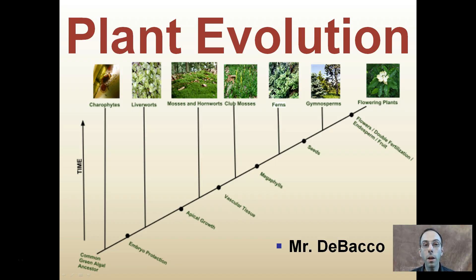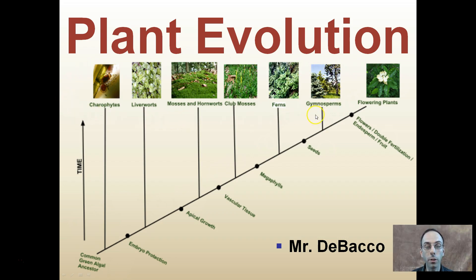This video is going to cover some of the basics of plant evolution and some of the key factors that divide different species and complexity. Starting all the way with the common ancestor being green algae and progressing all the way to flowering plants. You can see mosses, ferns, gymnosperms, and pine trees being in between the mix there.